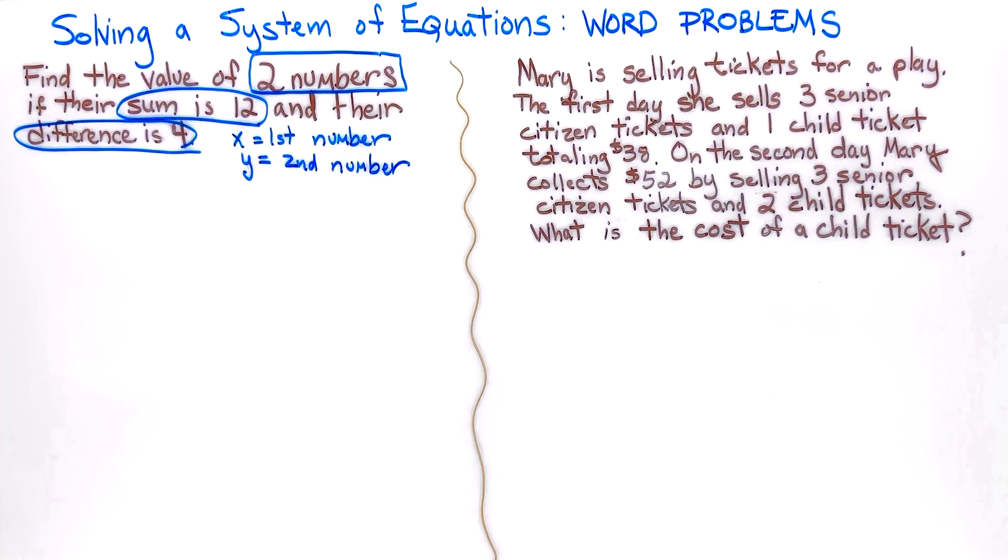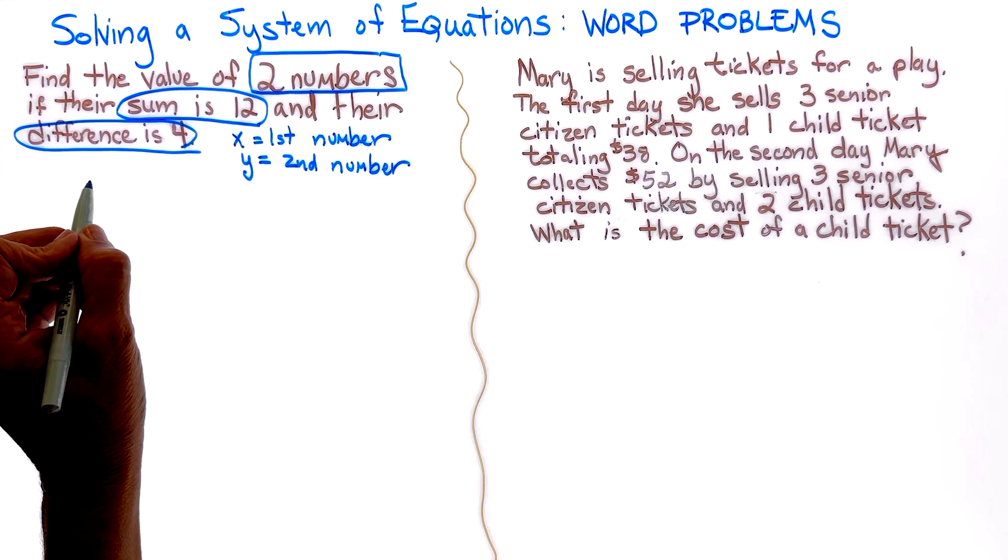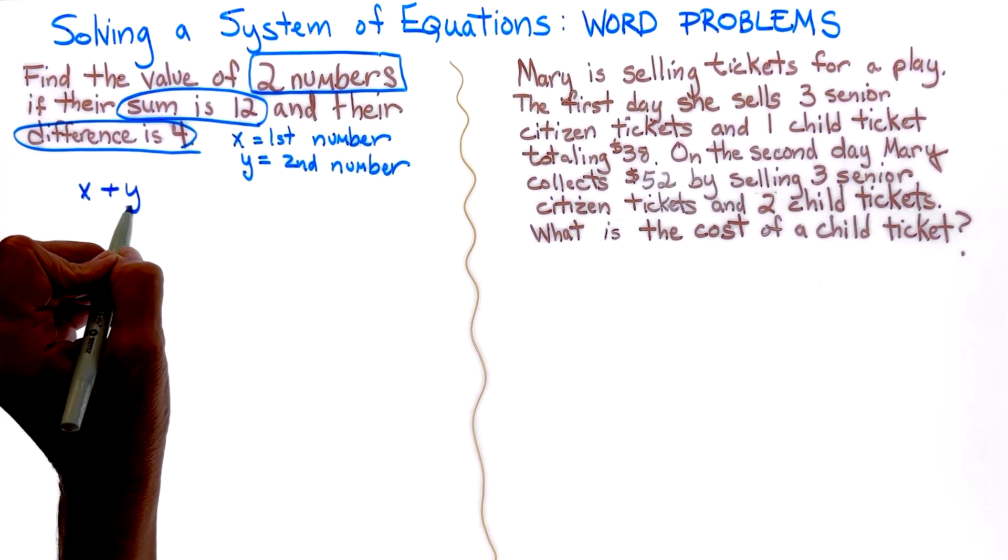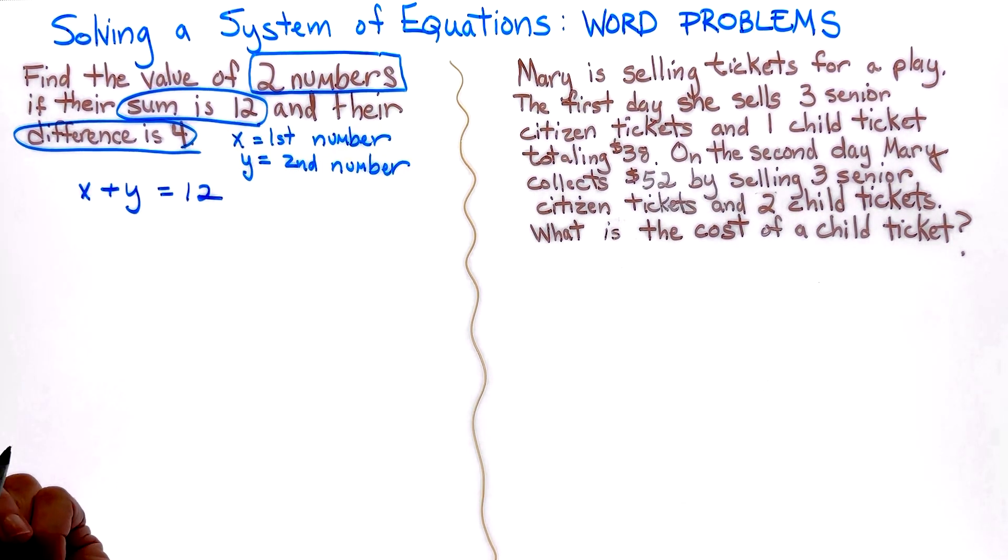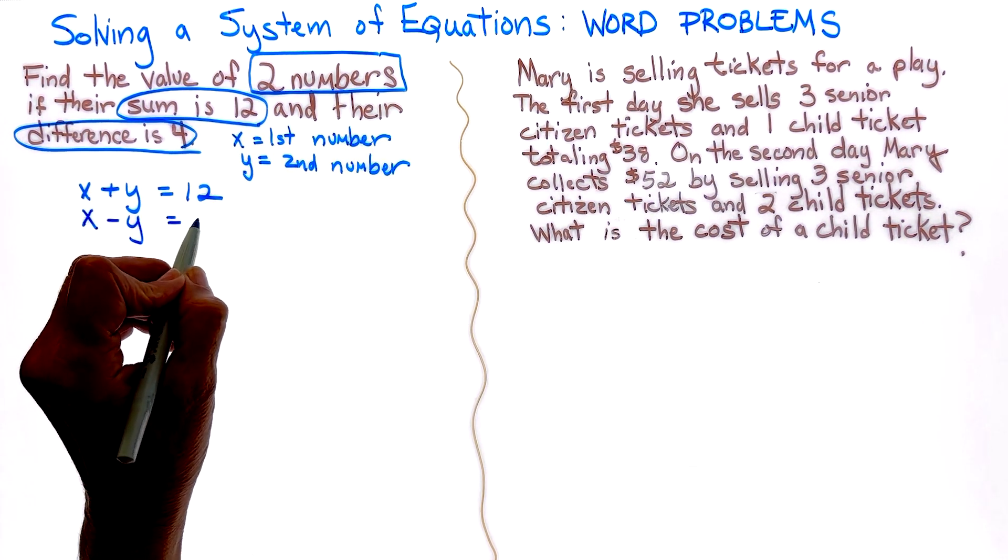So our first equation is the sum is 12, so it would be x plus y is equal to 12. The second equation, it's the difference is 4, so x minus y is equal to 4.